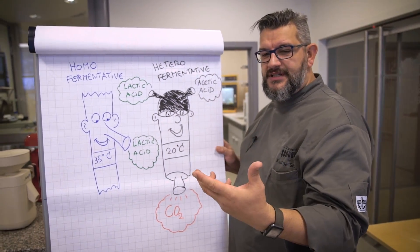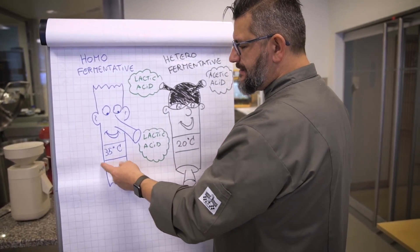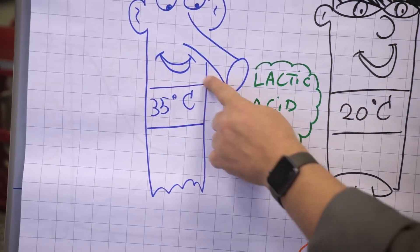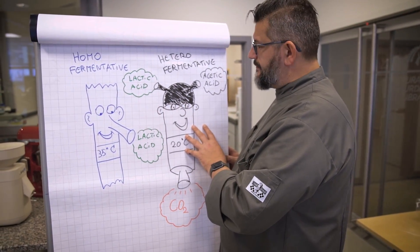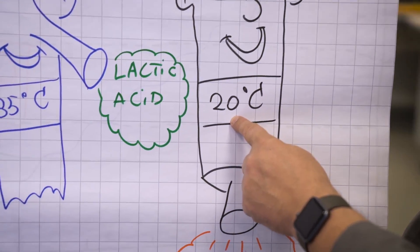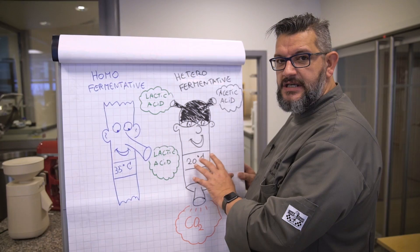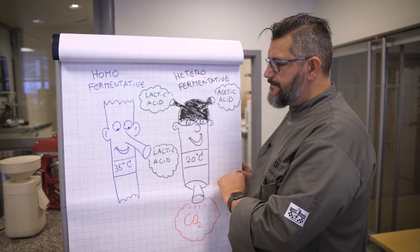The homofermentative lactic acid bacteria like temperatures of 35 degrees. The heterofermentative lactic acid bacteria prefer temperatures of 20 degrees centigrade.